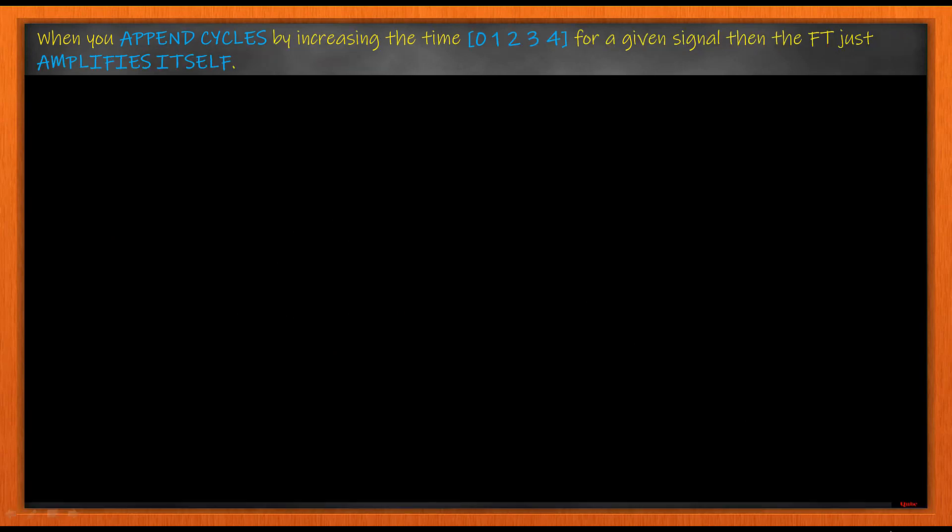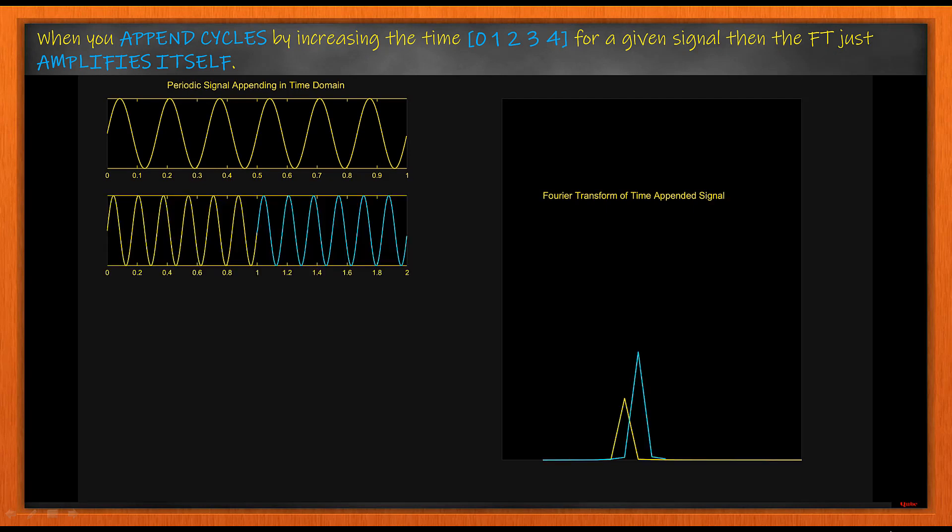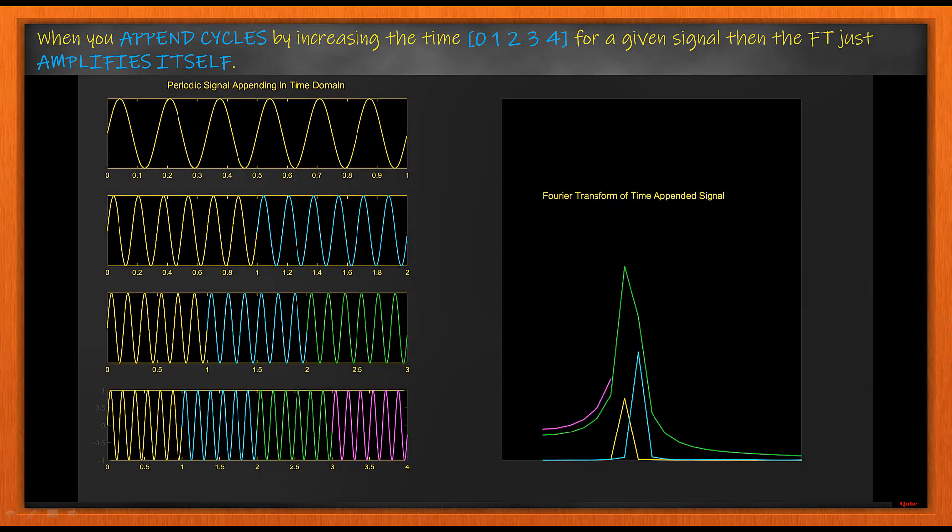Next we have time appending, where we increase the number of cycles as well as the time duration. Here as you can see, since the frequency is unaltered, the Fourier transform just amplifies itself.